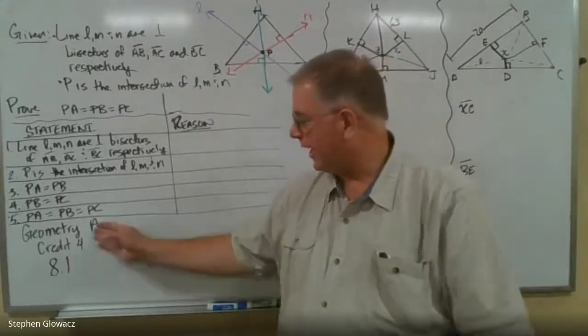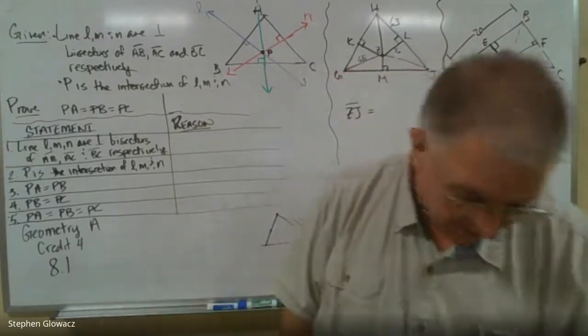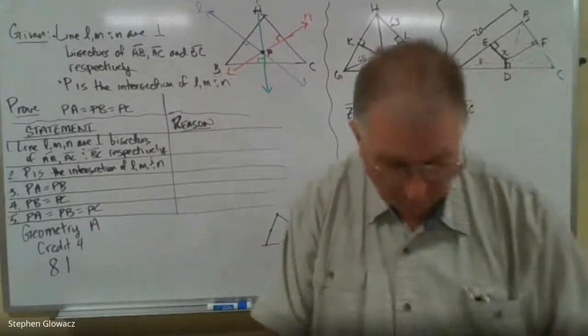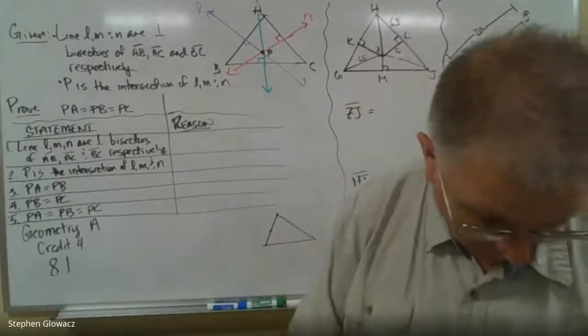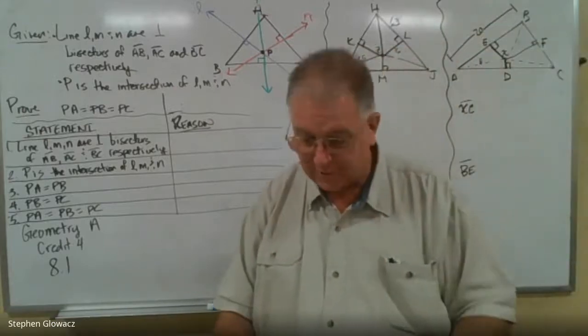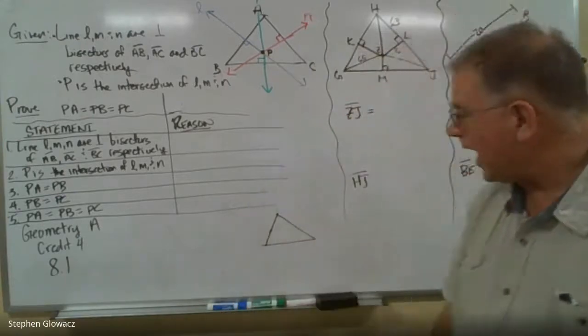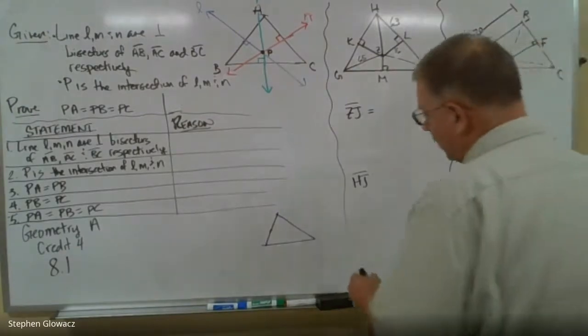Alright, moving along in Geometry A Credit 4, this is Lesson 8.1 now. Lesson 8.1 starts on page 38, entitled Perpendicular Bisectors of Triangles. Before we jump into the work, there's some important stuff for you to read on pages 38 and 39. We're going to pick it up with the proof at the top of page 40, but first of all, just a little bit of definition about what's going on here.